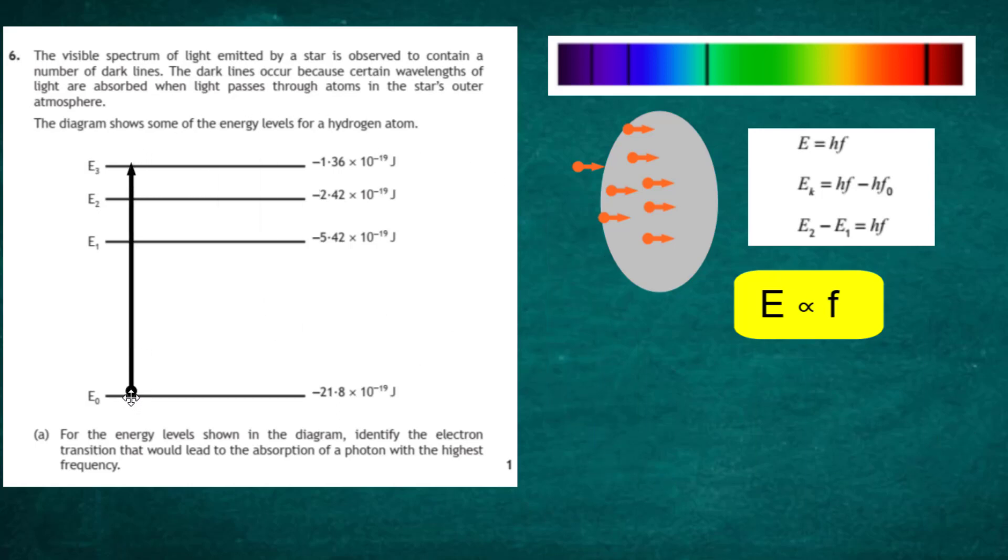So if you're an electron sitting here, and along comes a photon with the biggest amount of energy, that will give rise to the absorption of a photon with the highest frequency. Because only if your frequency is high enough will your energy be high enough. So the transition needed for that has got to be from energy level E0, all the way up to energy level E3.